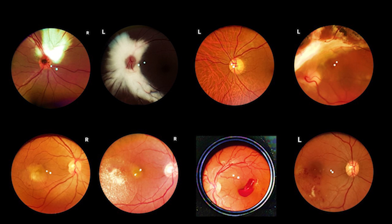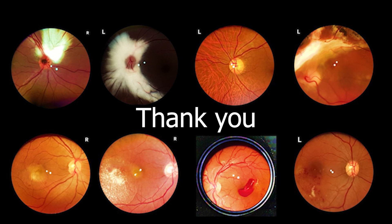Acquiring good indirect ophthalmoscopy skills with scleral depression gives you the advantage of venturing into the far periphery of the retina — an area not explored by many for lack of adequate skill and technique. I hope this presentation encourages some of you to take up that challenge. Indirect ophthalmoscopy is an art, and every time you get to see the spectacular image of the retina fill up the 20-diopter lens, it is absolute bliss. I hope this will inspire you to seriously take up vitreo-retinal subspecialty as your career. Thank you very much KSOS and Dr. Rajiv Sukhmaran for this opportunity.